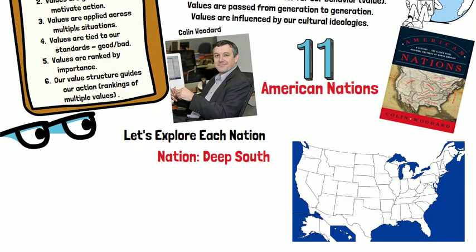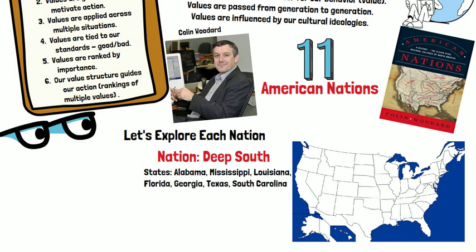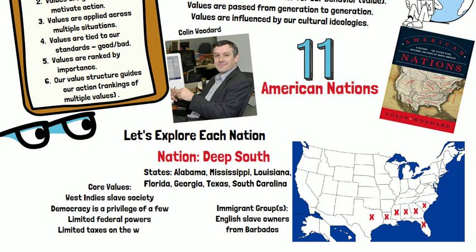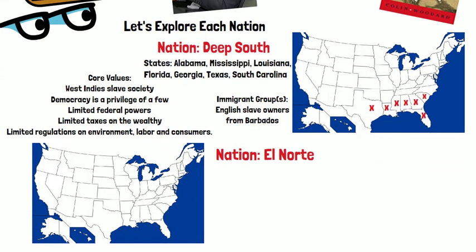The first nation is the Deep South. The Deep South was settled by English slave owners from Barbados. The states in the Deep South include Alabama, Mississippi, Louisiana, Florida, Georgia, Texas, and South Carolina. The core values here are related to those associated with the West Indies slave society. Democracy was seen as a privilege of a few, with limited federal powers, limited taxes on the wealthy, and limited regulations on the environment, labor, and consumers.